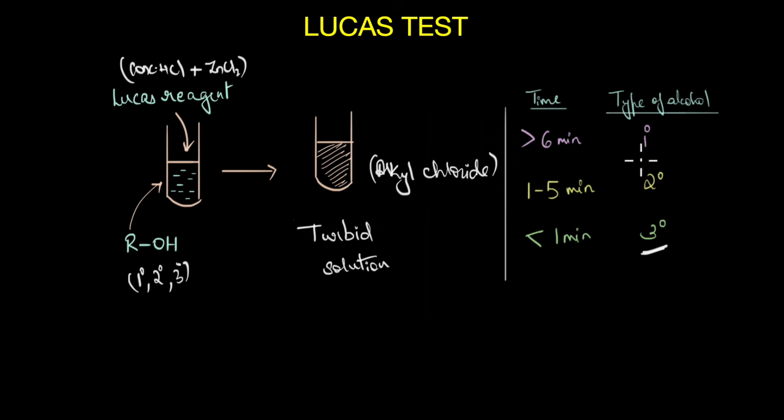Now primary alcohols as we already discussed react very slowly with Lucas reagent. In fact with the primary alcohol, the reaction can take from over 6 minutes to even several days. So this is the basis on which we can differentiate between the different types of alcohols.